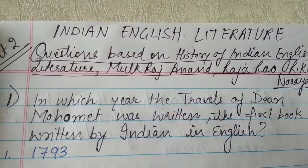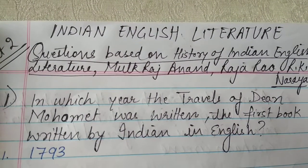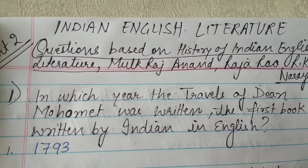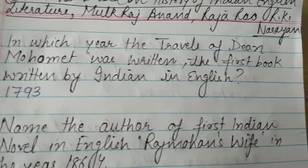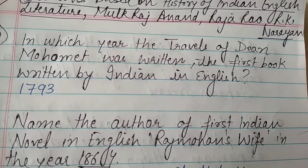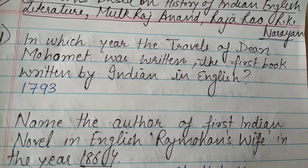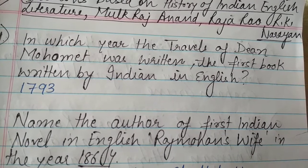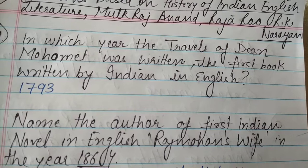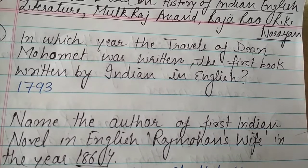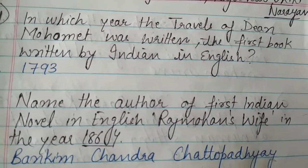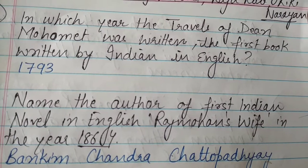This date 1793 is very important, as it was also the year when Coleridge met Wordsworth. Next: name the author of the first Indian novel in English, 'Rajmohan's Wife'. It was published in 1864 and written by Bankim Chandra Chattopadhyay.